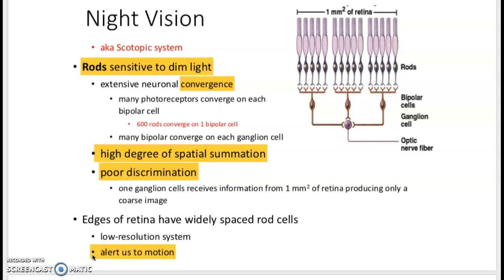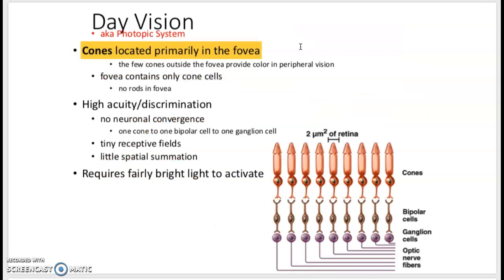Our day vision comes mostly from cones in your fovea centralis. And here we can see there's no convergence. One cone talks to one bipolar cell, talks to one ganglion cell for one optic nerve fiber. This allows us to have extremely high discrimination, so each individual cone can determine its own signal.